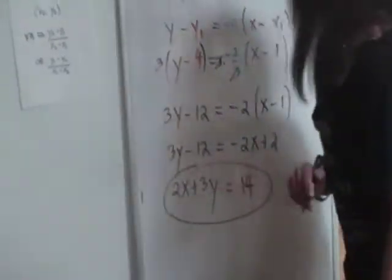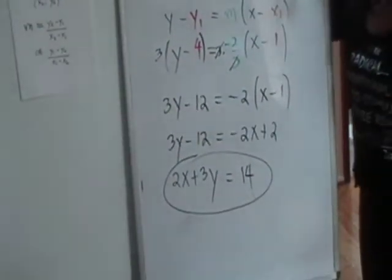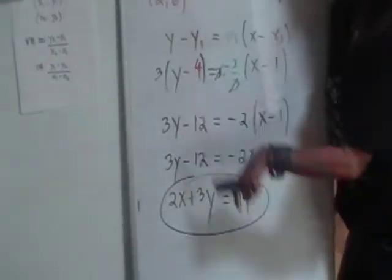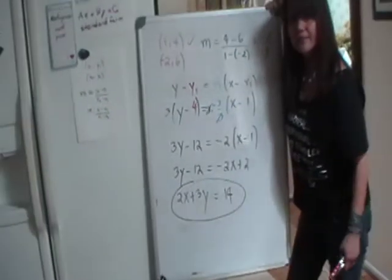And there you go, you have the standard form of the equation of the line that goes through the points (1, 4) and (-2, 6).